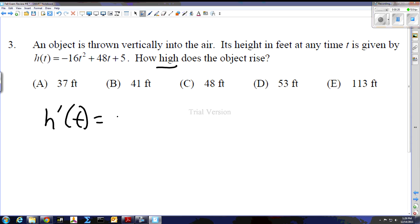So if we take the derivative of this, we get negative 32t plus 48, and if we set that equal to 0, we get negative 32t equals negative 48, so we get that t equals 3 halves.